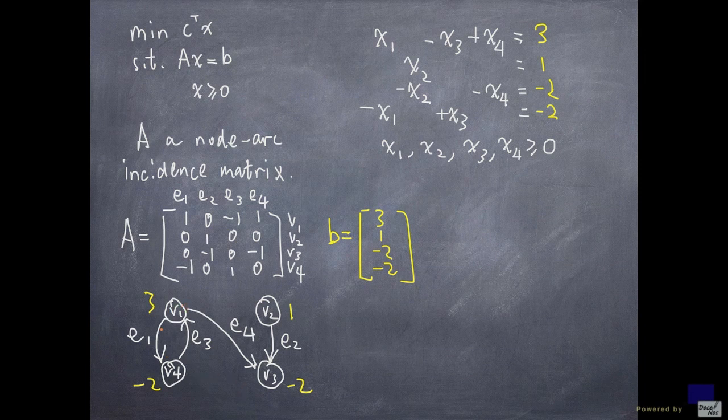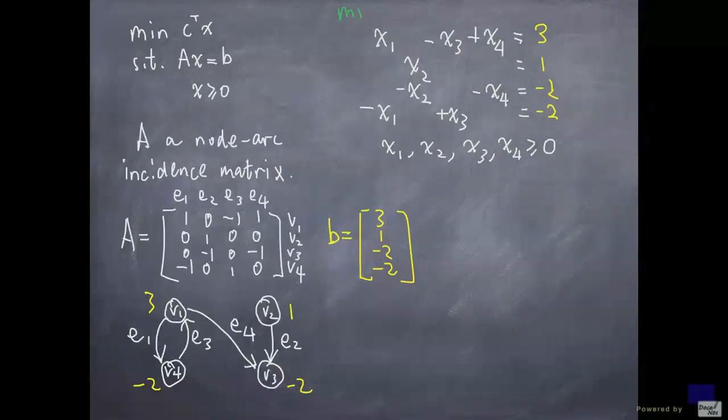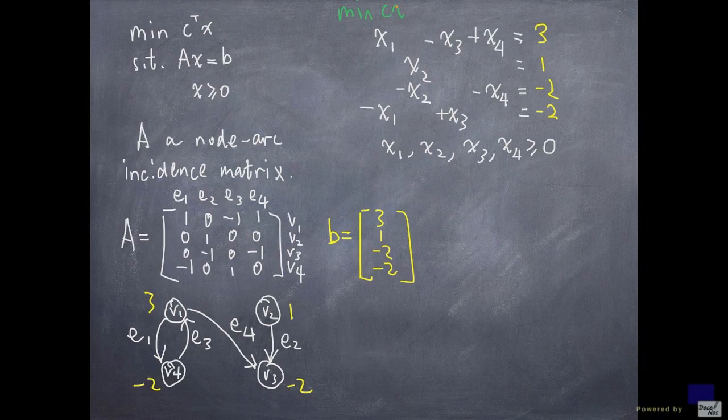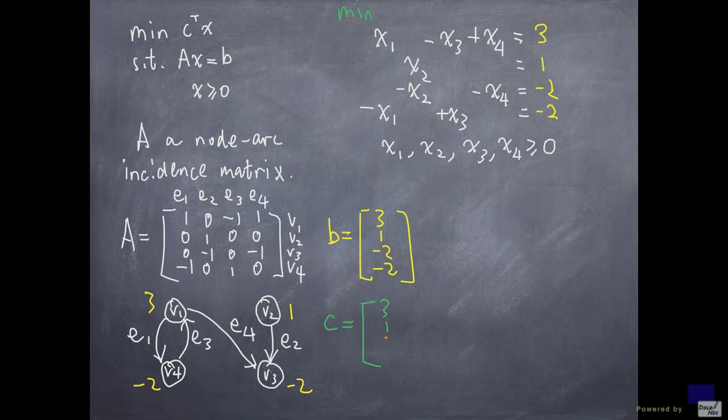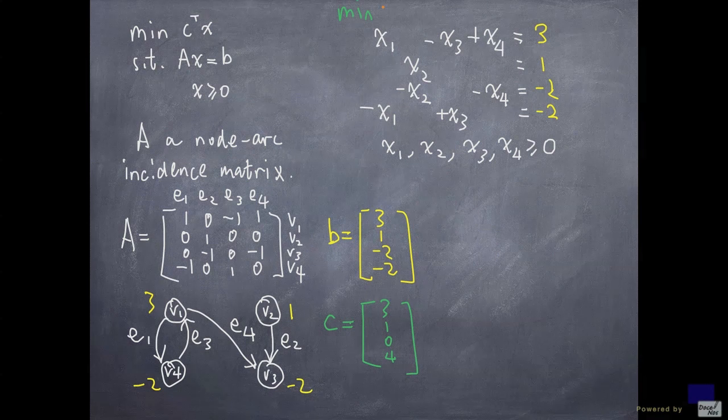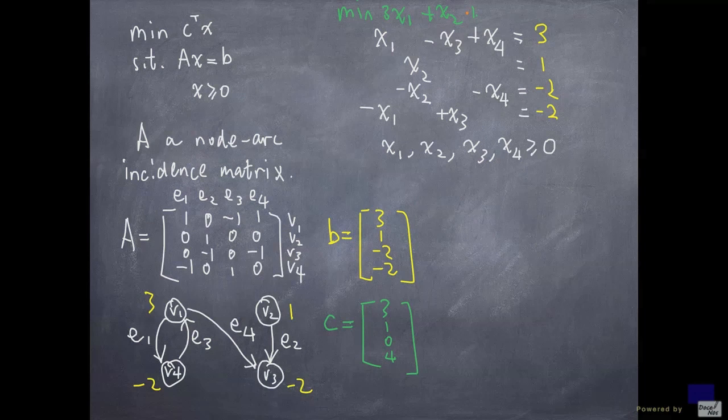And if we put a cost per unit of goods on each arc, say ci on ei, and ask for a solution minimizing this, say c transpose x, where say my c is 3, 1, 0, 4, so 3x1 plus x2 plus 4x4.